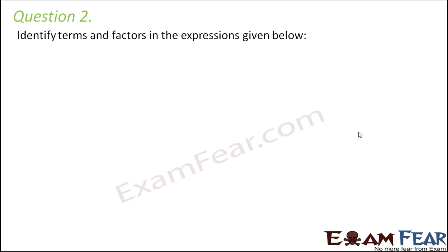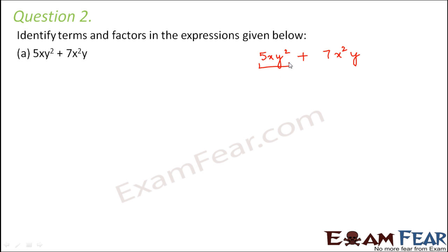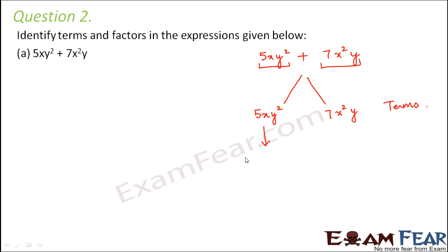Question number 2: Identify terms and factors in the expressions given below. The first expression is 5xy squared plus 7x squared y. It has two terms: 5xy squared and 7x squared y. The factors of 5xy squared are 5, x, y, and y. Similarly, 7x squared y can be written as 7 into x into x into y, so those are its factors.